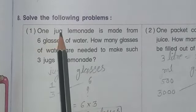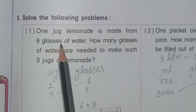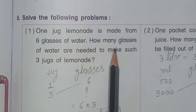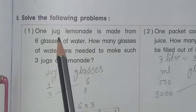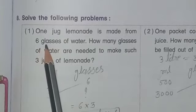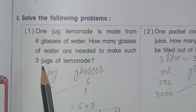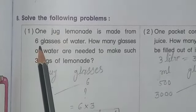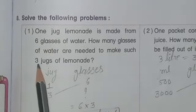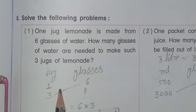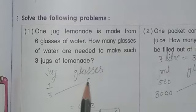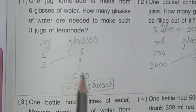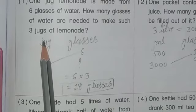Question number 8, first sum: one jug of lemonade is made from six glasses of water. How many glasses of water are needed to make three jugs? One jug requires 6 glasses, so three jugs require 6 multiplied by 3 equals 18 glasses. Total 18 glasses are needed for three jugs. First sum completed.